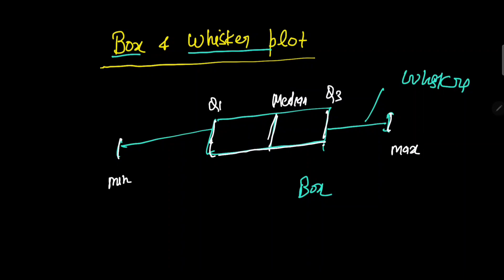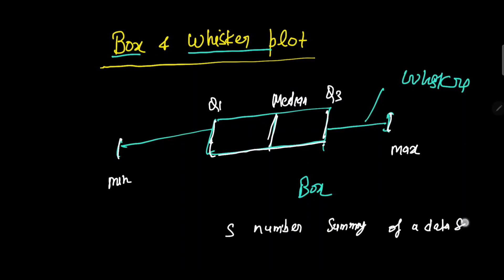This box plot has five points and all these five points are simply a five-number summary of a data set. In other words, we can say that a box plot is a graphical representation of a five-number summary of a data set.